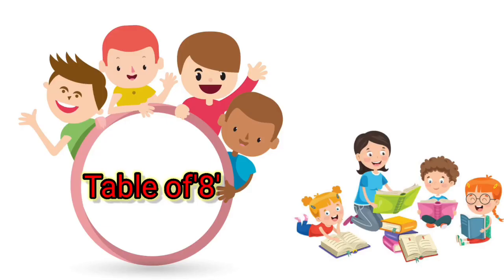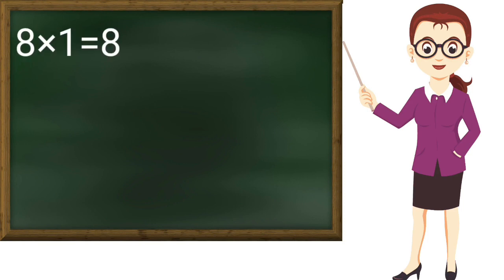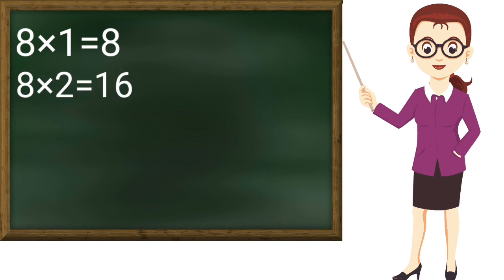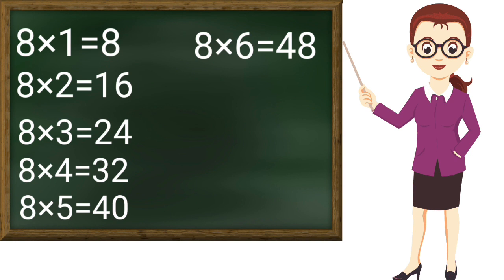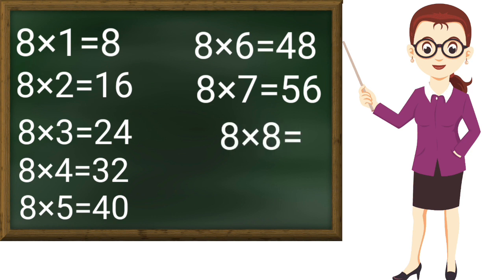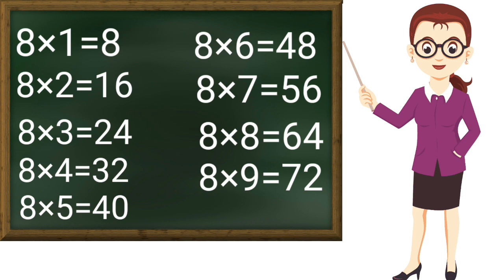Now table of 8: 8 ones are 8, 8 twos are 16, 8 threes are 24, 8 fours are 32, 8 fives are 40, 8 sixes are 48, 8 sevens are 56, 8 eights are 64, 8 nines are 72, 8 tens are 80. Thanks ma'am.